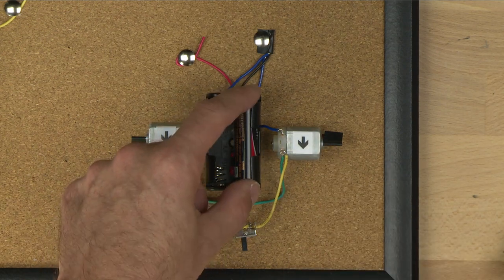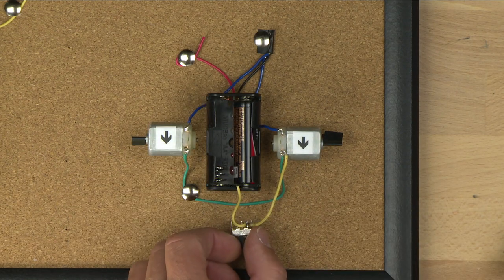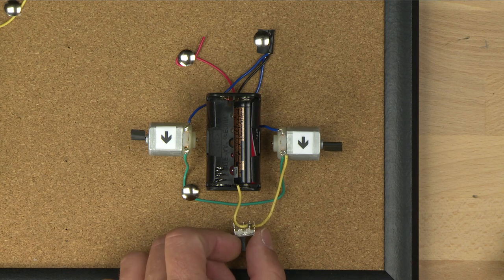And so we're going to use this battery to make the motors turn backwards. So you can see when we turn it on, the motors spin backwards.